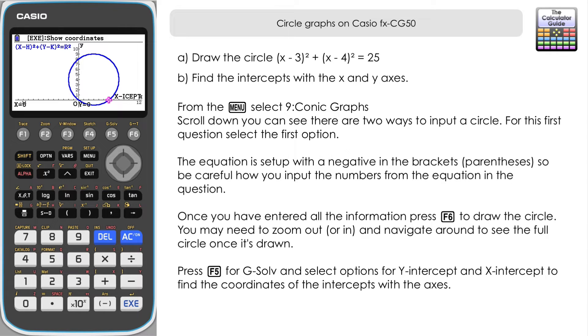Certainly helpful if we're asked to sketch this particular circle. We can take this information from the CG50 and then label it on our sketch with ease.